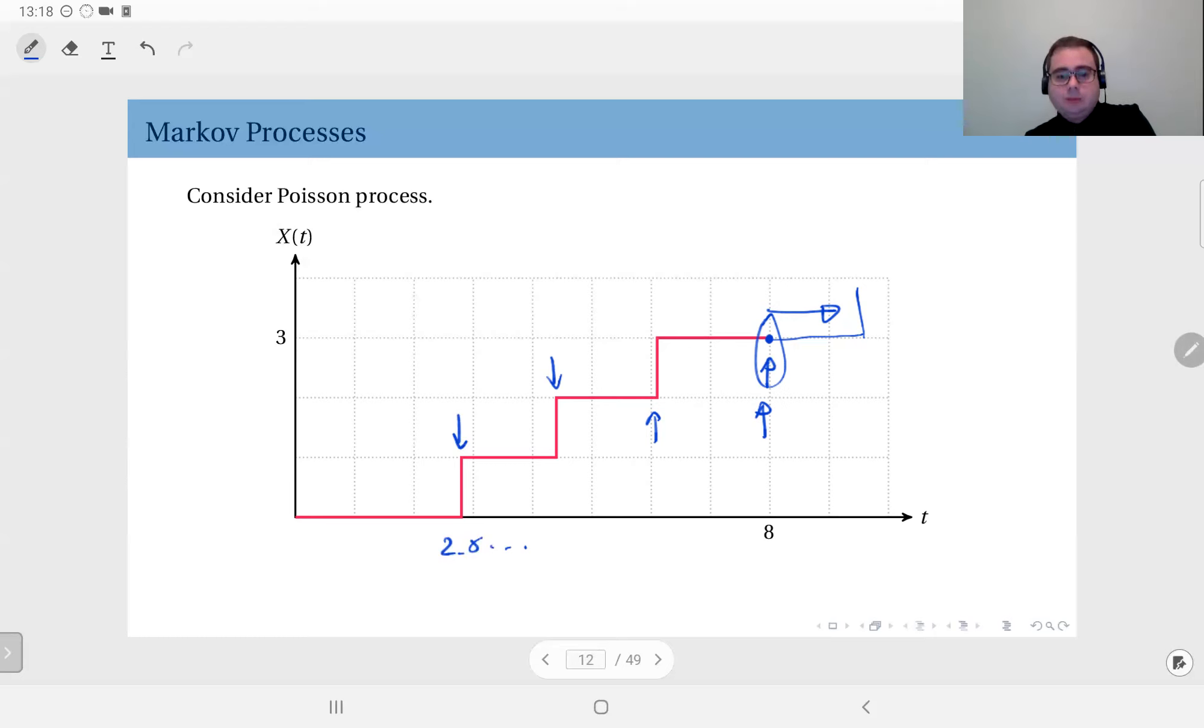For instance it could have taken this red path, this blue path or this blue path or this one, or maybe the events occurred really early on but it didn't occur for some time, or maybe they occurred just very recently.